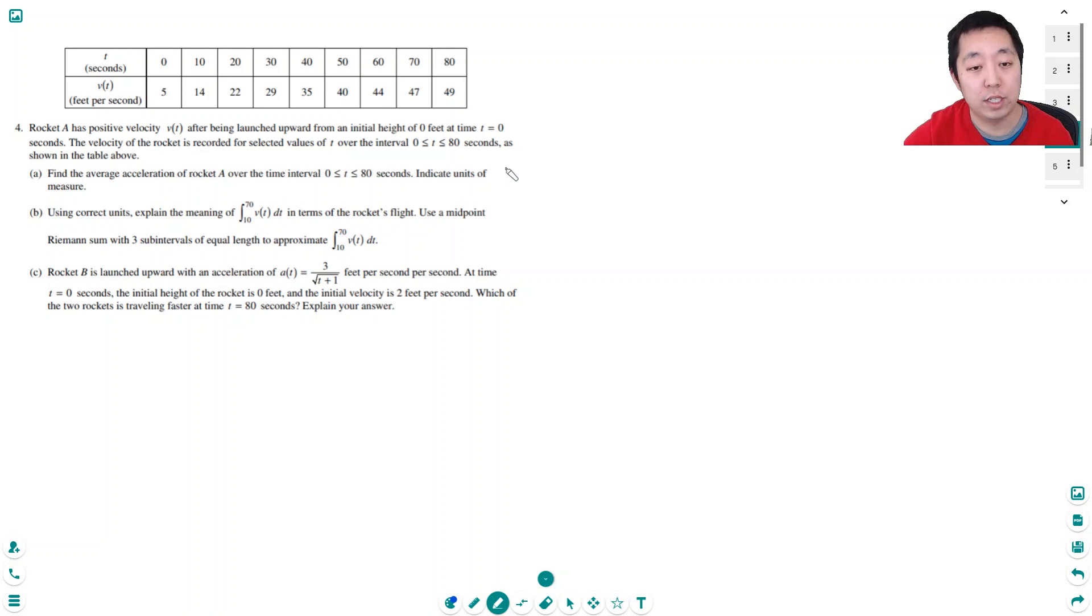The average acceleration is simply the change in velocity over time. So v of 80 is 49 feet per second minus v of 0 which is 5 feet per second divided by 80, which equals 44 over 80. That's equal to 11 over 20 feet per second. I'm just going to leave it as a fraction because this is a non-calculator portion.